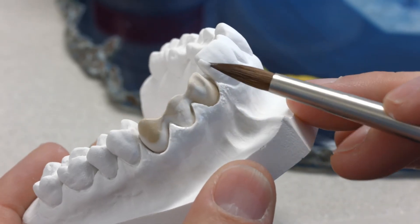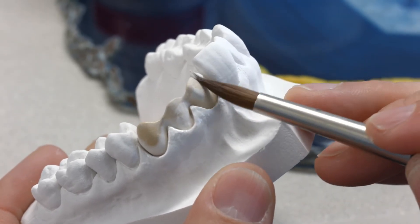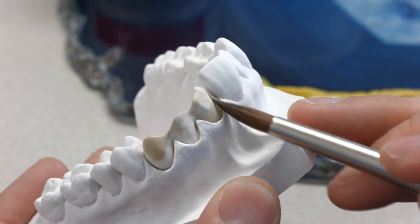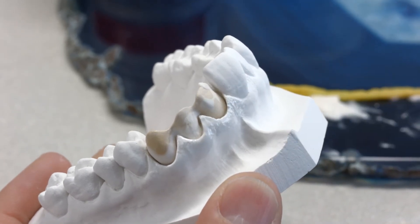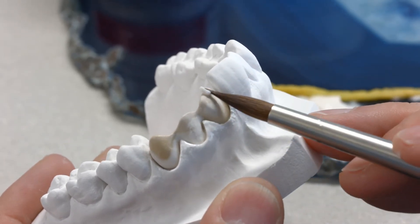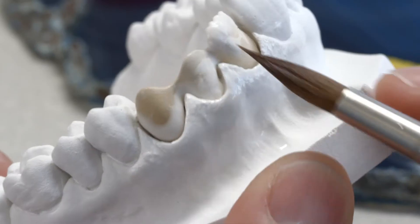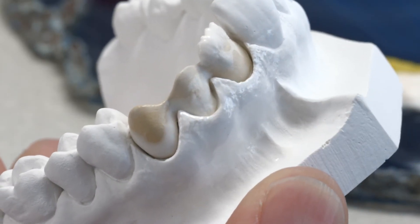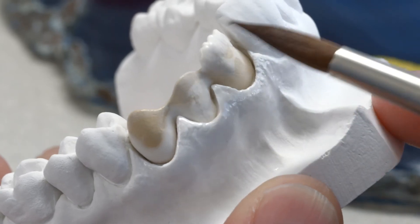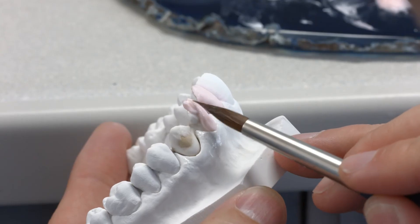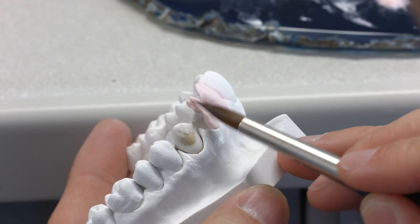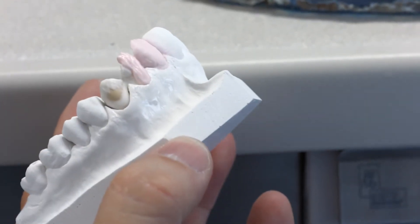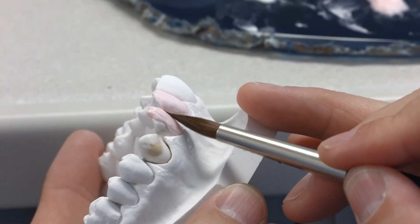Apply IPS Style Ceram Deep Dentin in areas with low ceramic thickness and at the incisal ends of the framework. This helps to mask light optical refractive edges and obtain true-to-nature shade results. Now you can start layering the dentin core. First, build it up to full contour and then cut it back.